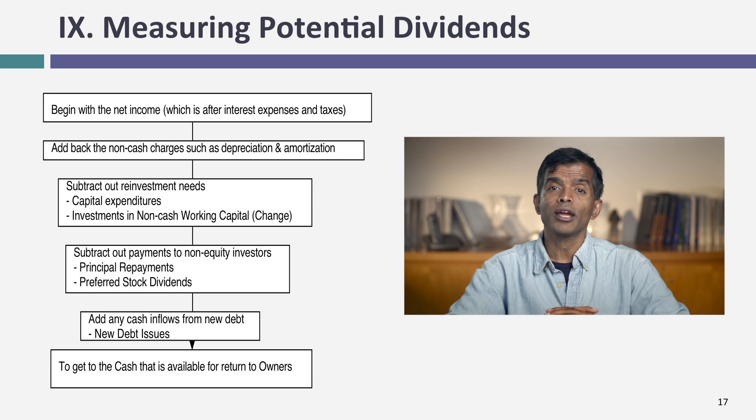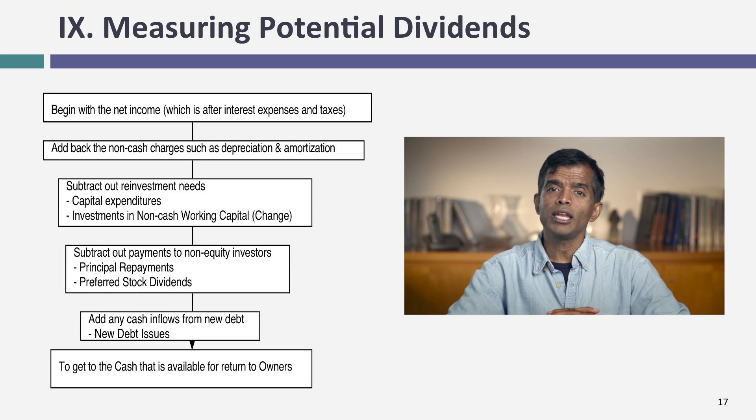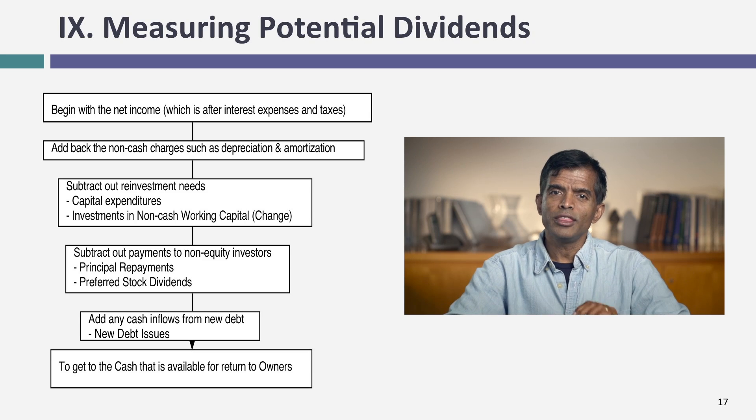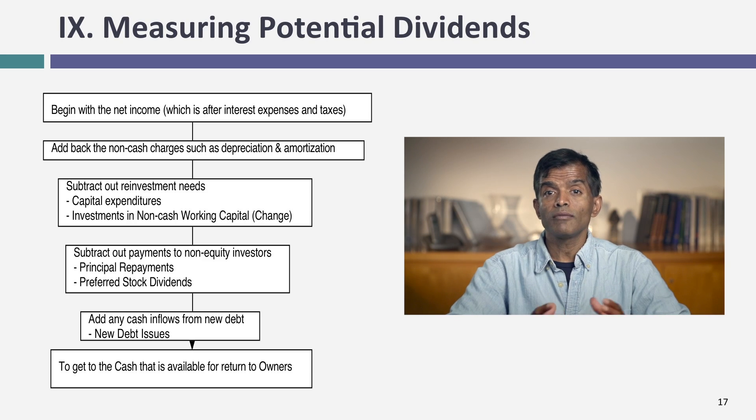When we got to dividend policy, the key step was assessing how much a company could pay in dividends. To measure potential dividends, we started with net income, subtracted out every conceivable need — capital expenditures, working capital, debt payments — added back any new cash from debt issues, and got the free cash flow to equity, a potential dividend. This is what companies can afford to pay. But many companies don't pay out what they can, which leads to the building up of cash balances. Some companies can accumulate large cash balances and are left alone; others face pressure from stockholders to return even smaller balances. It all revolved around the trust that stockholders have in the managers.